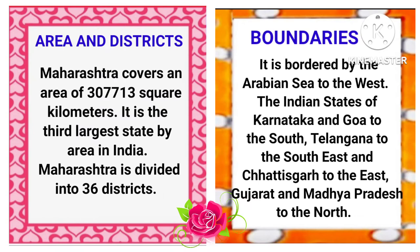Area and districts: Maharashtra covers an area of 3,07,713 square kilometers. It is the third largest state by area in India. Maharashtra is divided into 36 districts. Boundaries: it is bordered by the Arabian Sea to the west, the Indian states of Karnataka and Goa to the south, Telangana to the south east and Chhattisgarh to the east, Gujarat and Madhya Pradesh to the north.